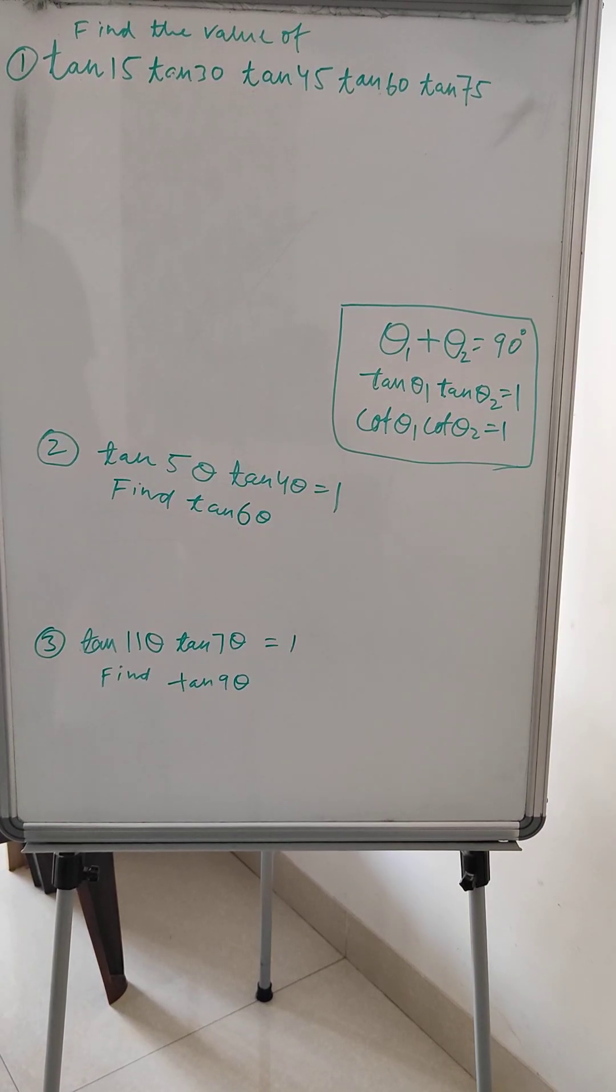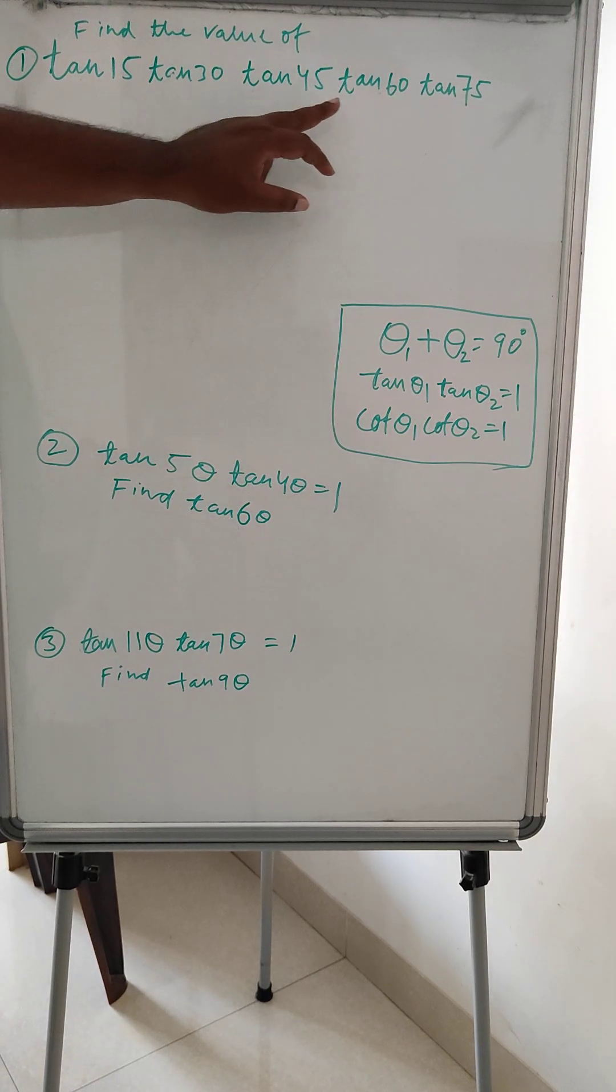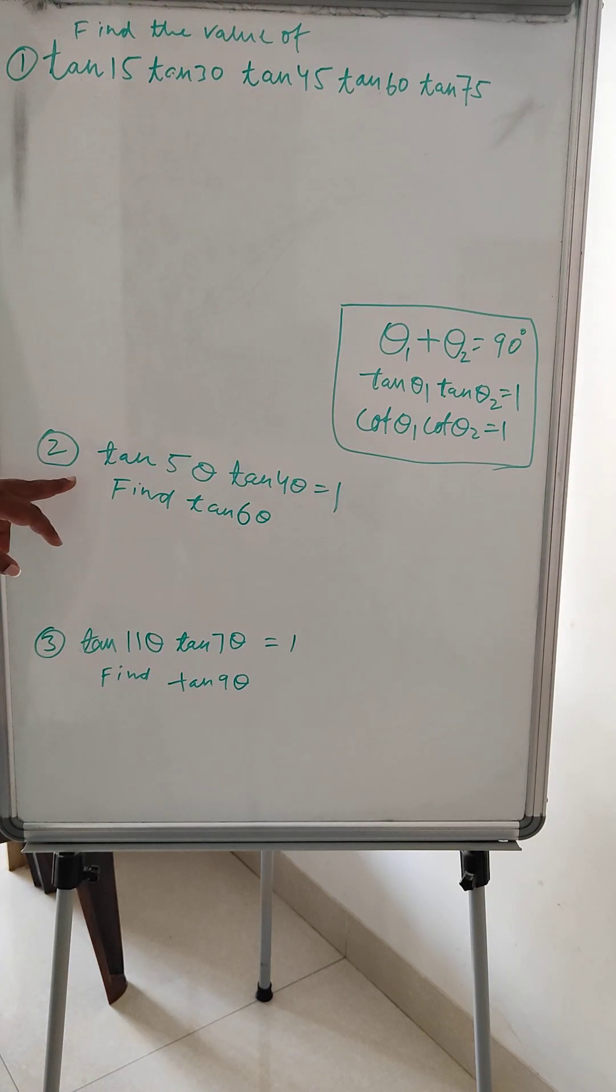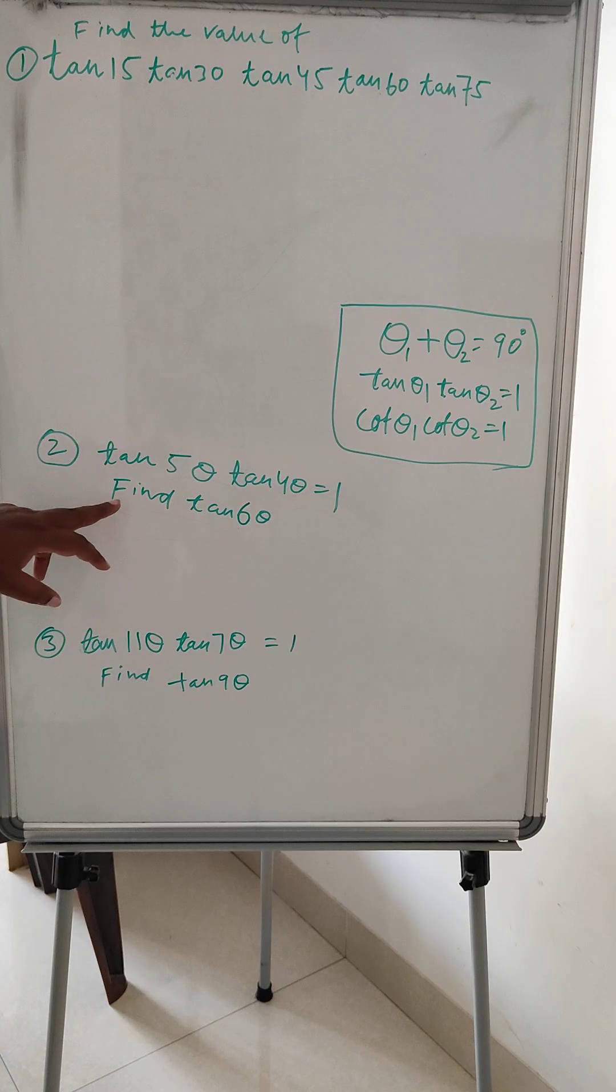Hello, hi everyone. So today we have listed down three questions, all into trigonometry. Question one: find the value of tan 15° × tan 30° × tan 45° × tan 60° × tan 75°. Question two: given tan 5θ × tan 4θ = 1, find the value of tan 6θ. And question three: tan 11θ × tan 7θ = 1, then find the value of tan 9θ.